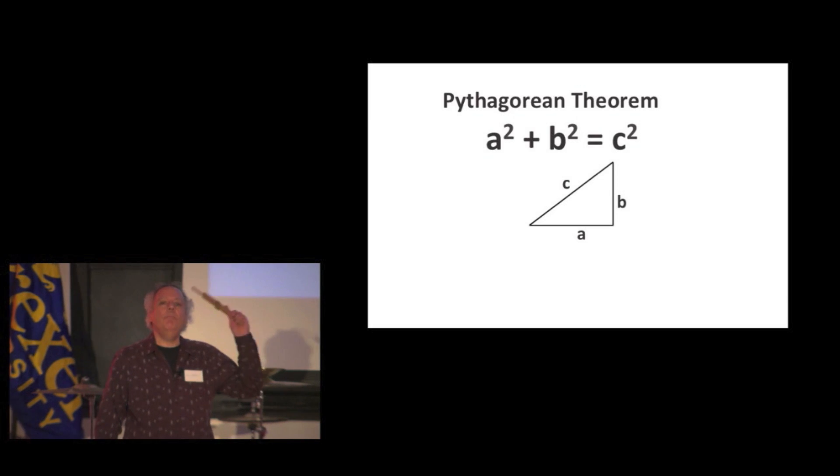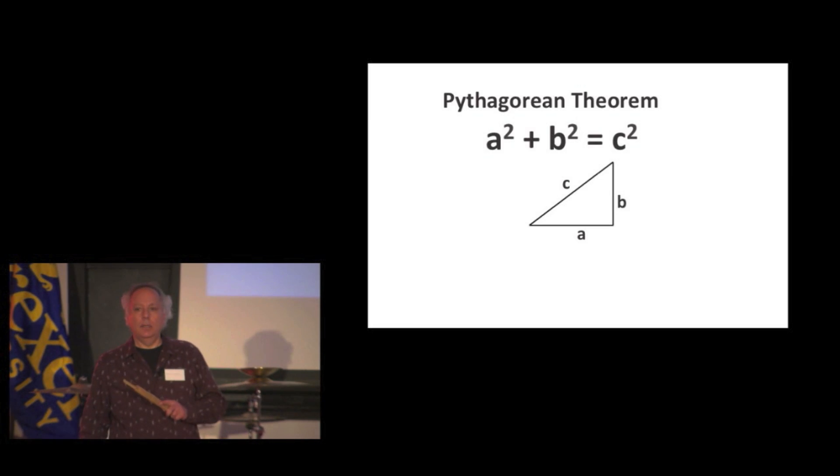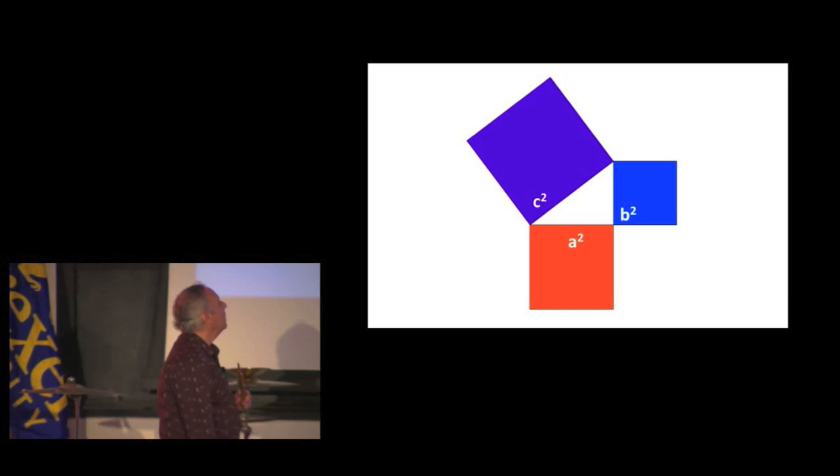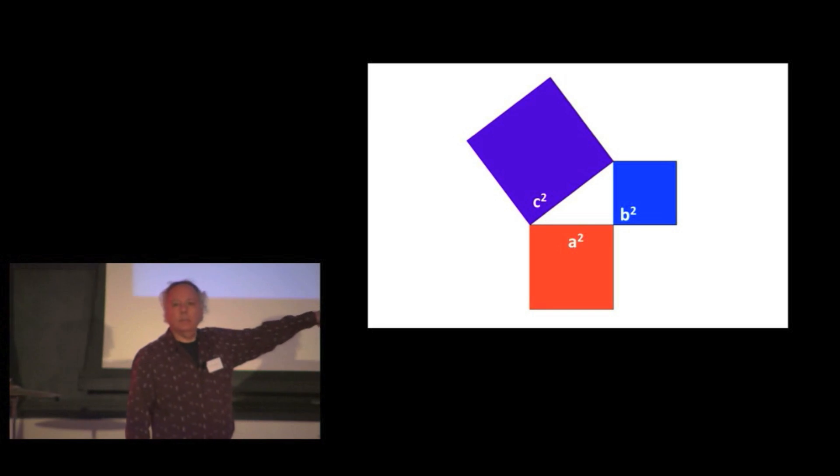It dawned on me many, many, many years later that this is what Pythagoras was thinking. That if you draw a square around the A and draw a square around the B and draw a square around the C. Now, that may not shatter your world, but someone, when I was in school, could have mentioned it.